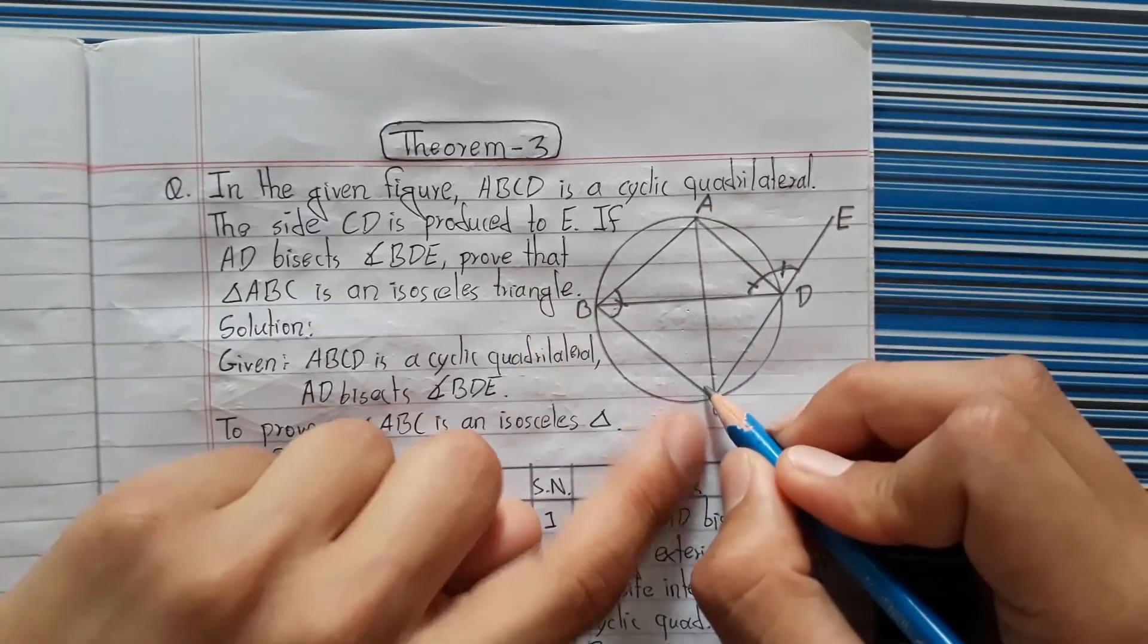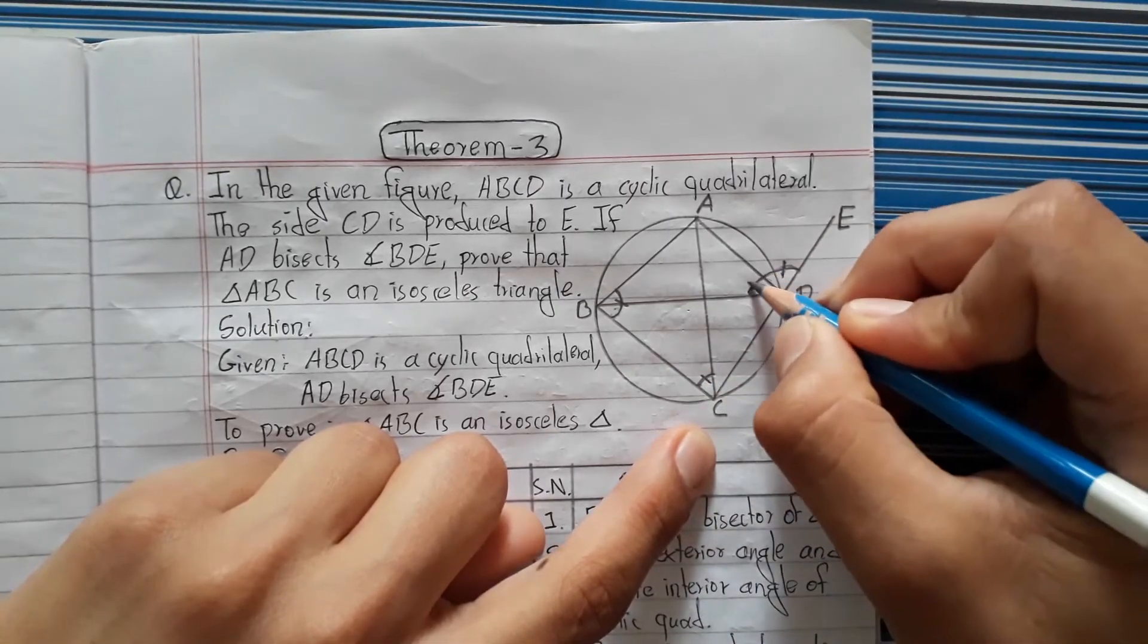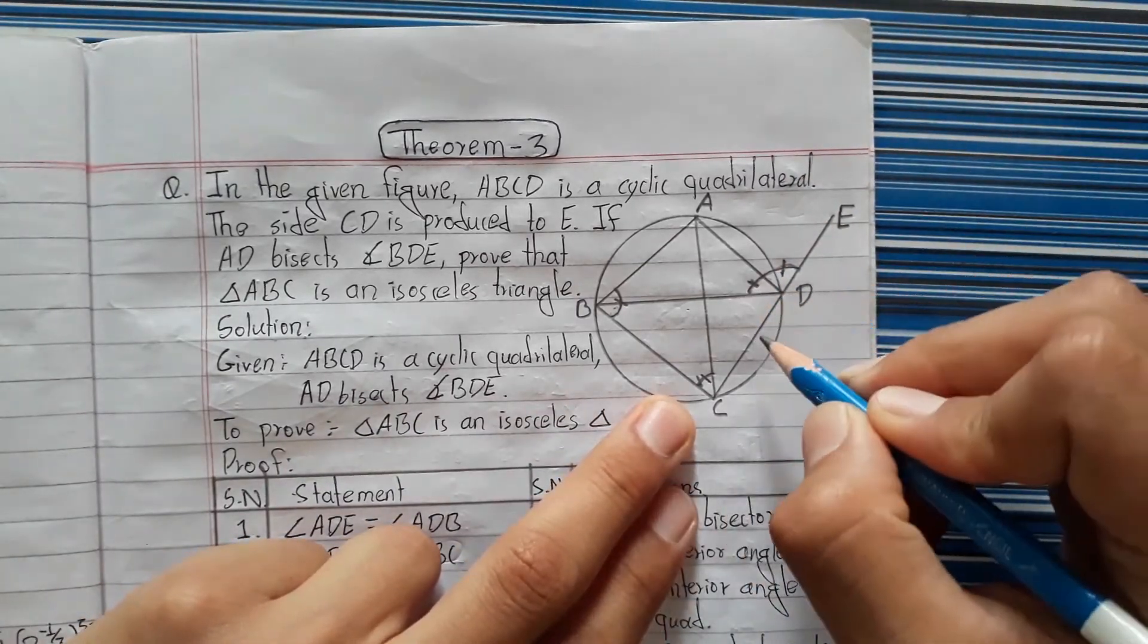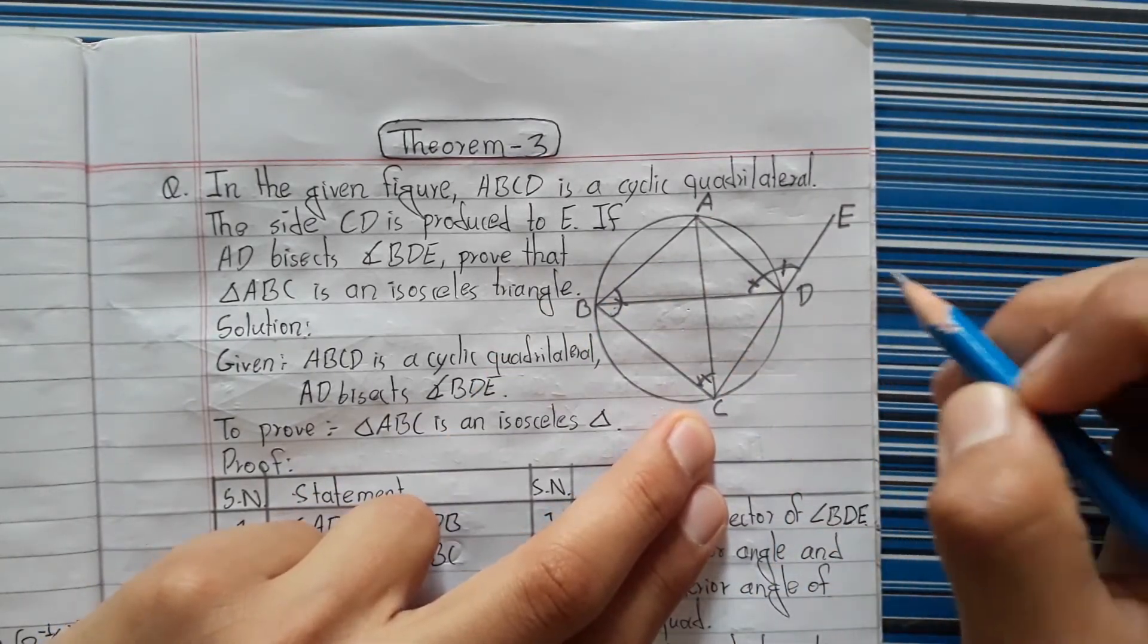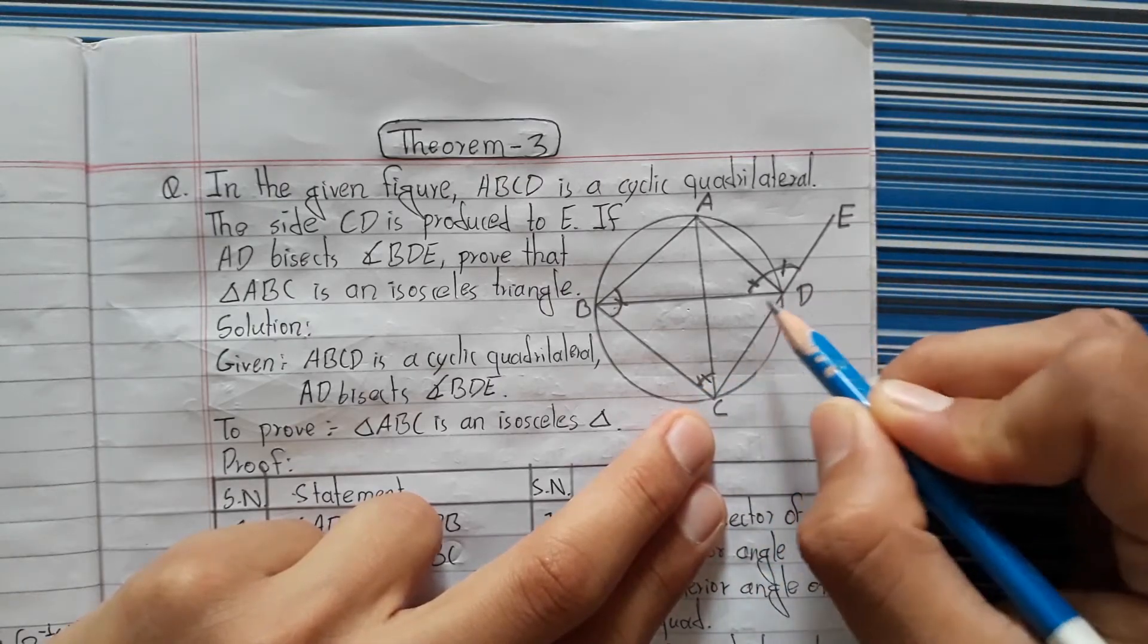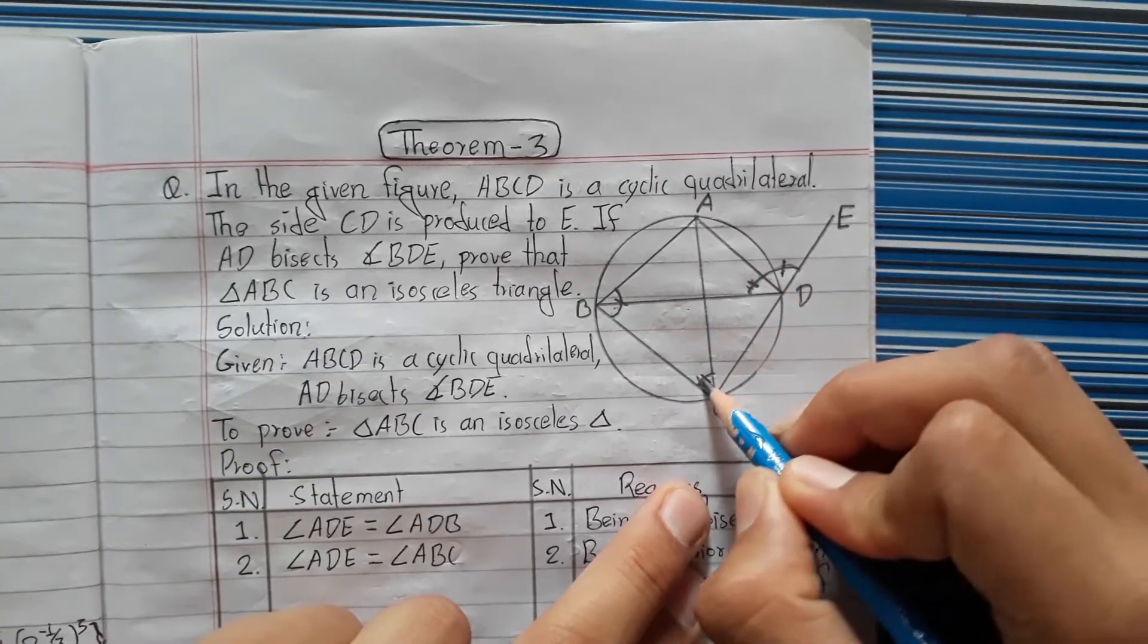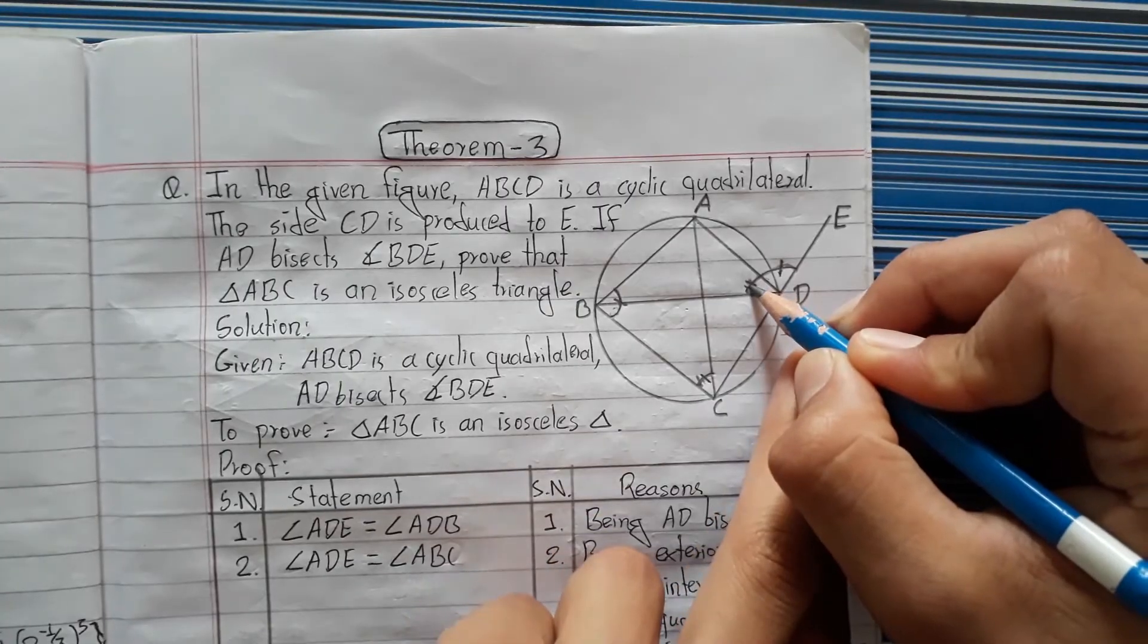This angle is equal to this angle. This angle is equal to this angle. We are considering these angles - this angle is equal to this angle, this angle is equal to this angle.